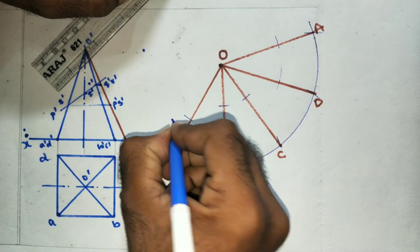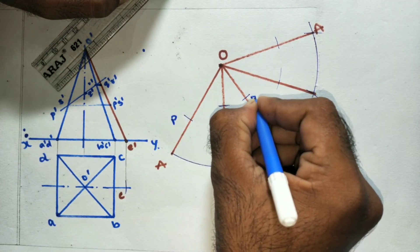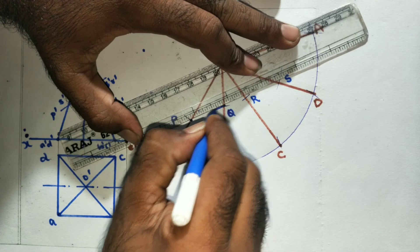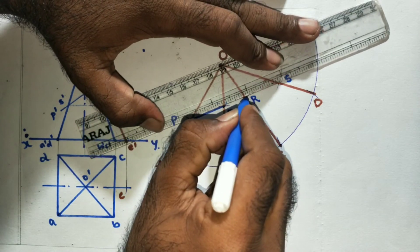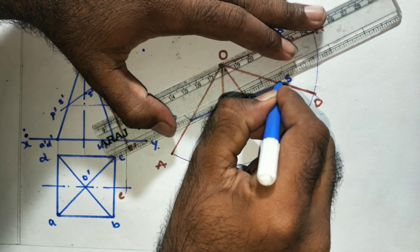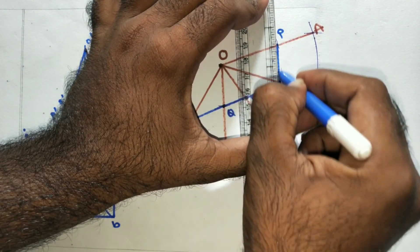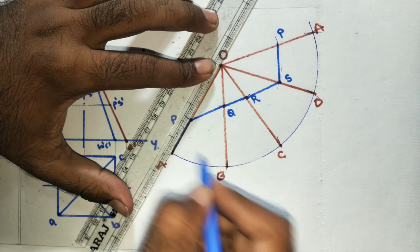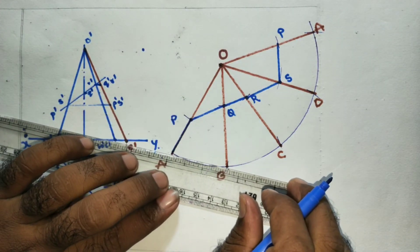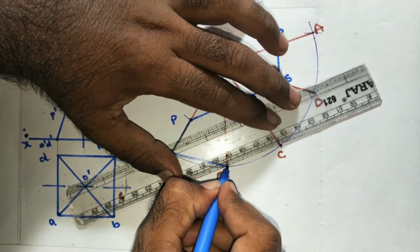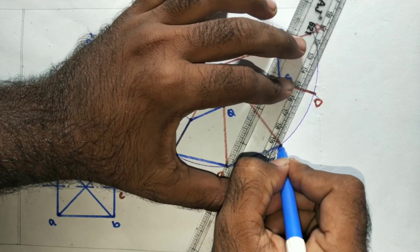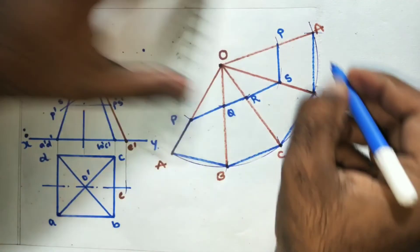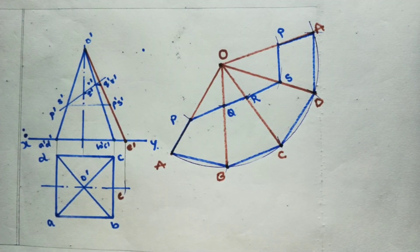Cut the compass. Mark P, Q, R, S, and P. Connect A to B, B to C, then C to D, then D to S. This completes the development of the truncated square pyramid.